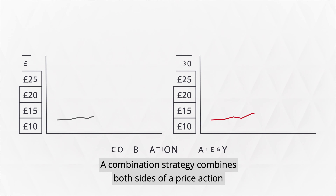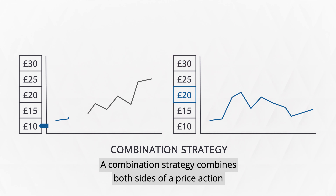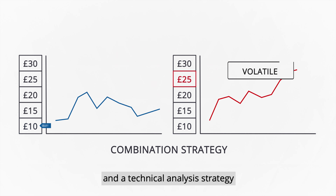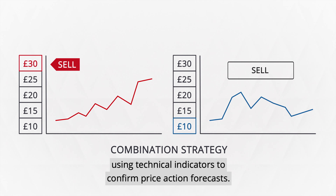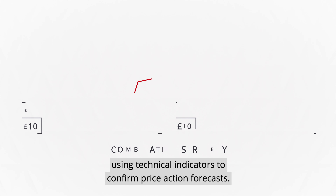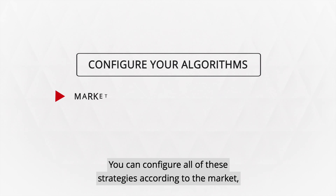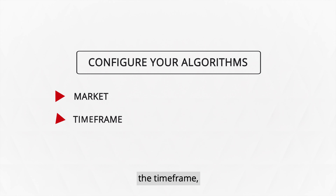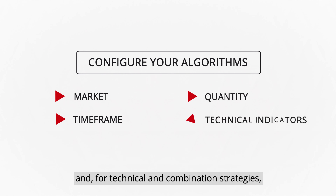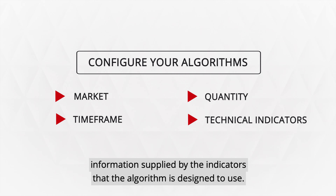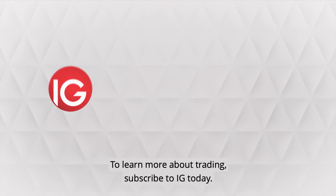A combination strategy combines both sides of a price action and a technical analysis strategy, using technical indicators to confirm price action forecasts. You can configure all of these strategies according to the markets, the timeframe, the size of the trade, and for technical and combination strategies, information supplied by the indicators that the algo is designed to use.